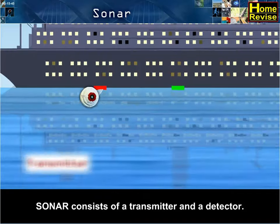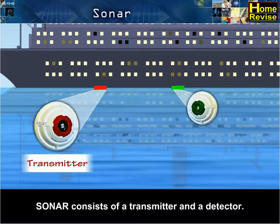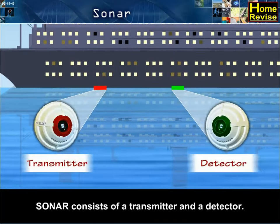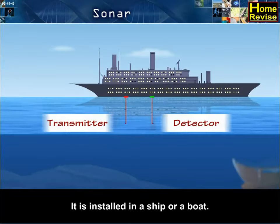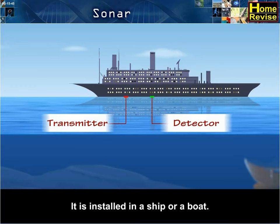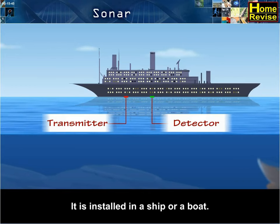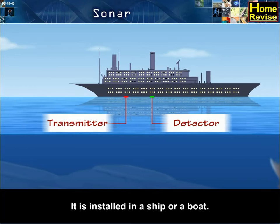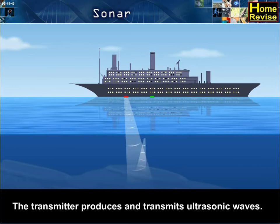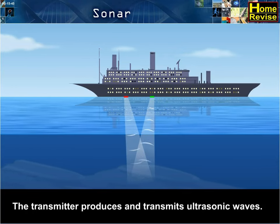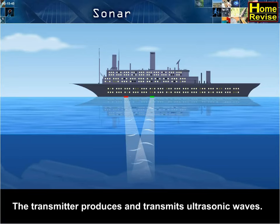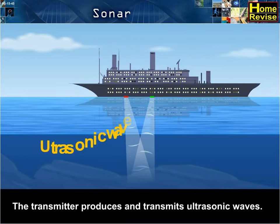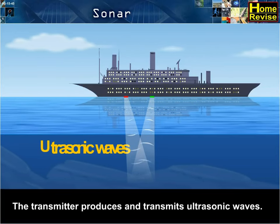Sonar consists of a transmitter and a detector. It is installed in a ship or a boat. The transmitter produces and transmits ultrasonic waves.